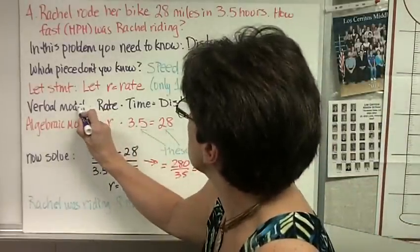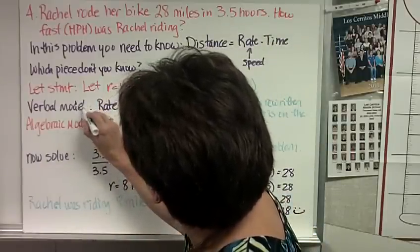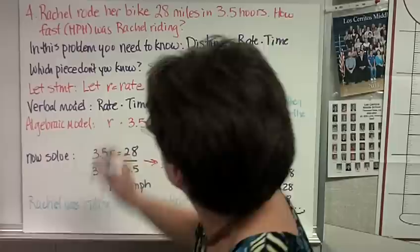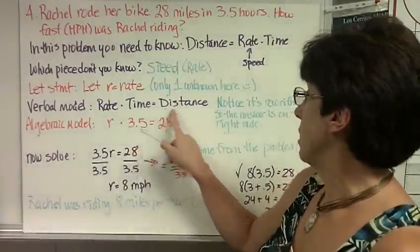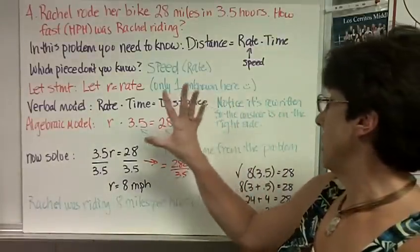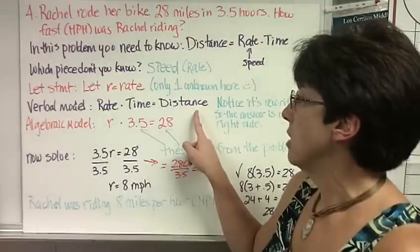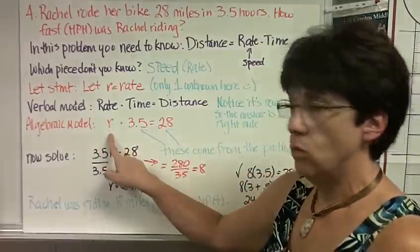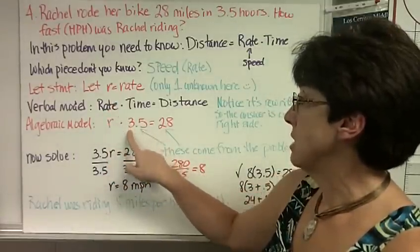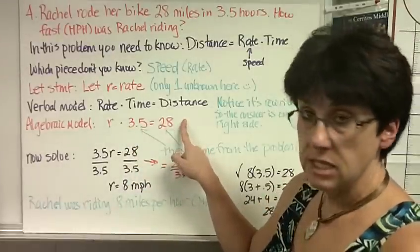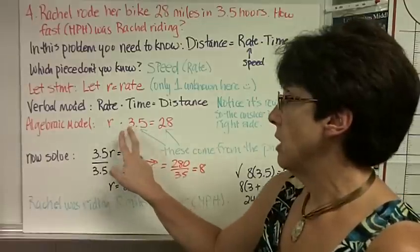This says verbal model, but apparently when I was going across, I smushed it up with my finger. So let me write that again. Verbal model. Our verbal model is always rate times time equals distance. Notice I rewrote it so the answer is on the right side because we like to solve it that way. The algebraic model, we just substitute in. Rate is the one we don't know, so we say that that's R times time. That's from our problem equals distance. That's from our problem. I say these two come from the problem.